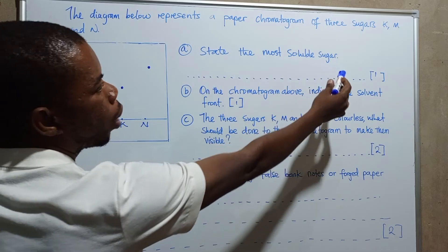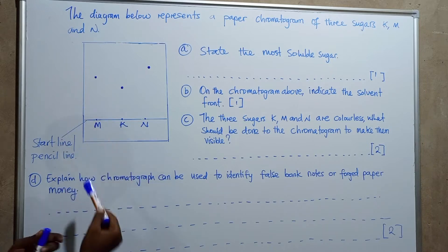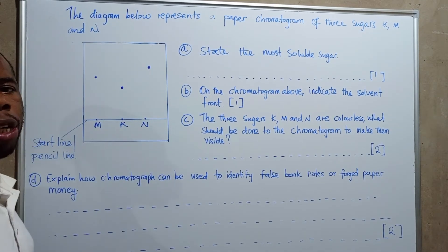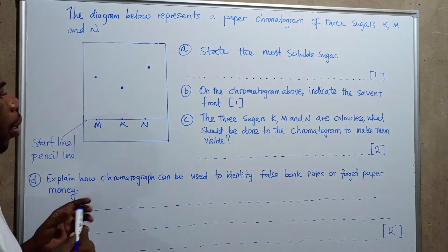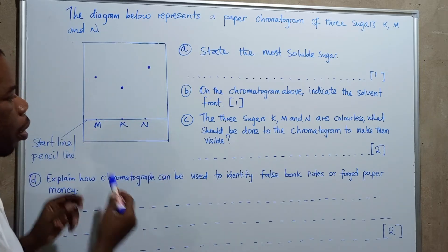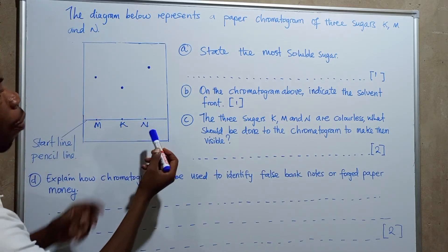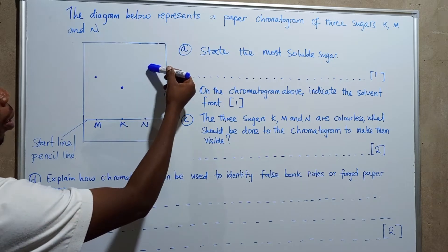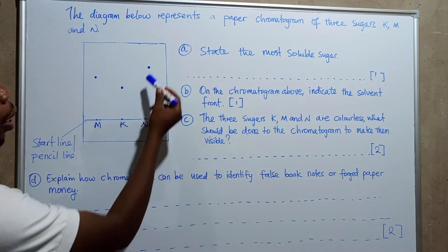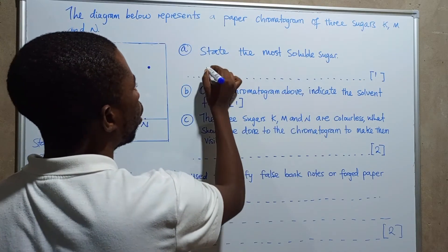The first question says: state the most soluble sugar. From K, M, and N, we need to identify which one is most soluble. The most soluble one is the one that traveled the longest distance from the start line. Comparing the distances, sugar N traveled the furthest from the start line, so it is the most soluble. You write: sugar N.